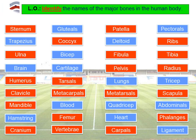Starting in the top left-hand corner we have the sternum, then the ulna, humerus, clavicle, mandible, cranium, coccyx, tarsals, metacarpals, femur, vertebrae, patella, fibula, pelvis, metatarsals, carpals, ribs, tibia, radius, scapula, and phalanges.